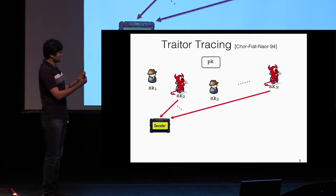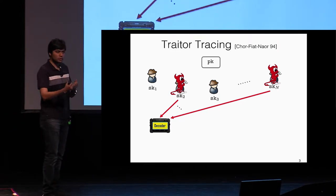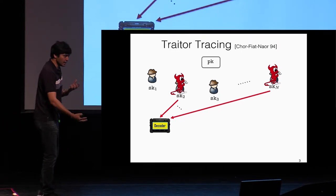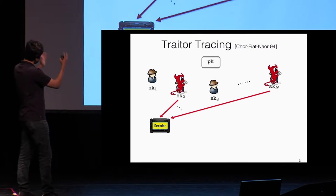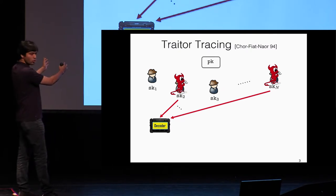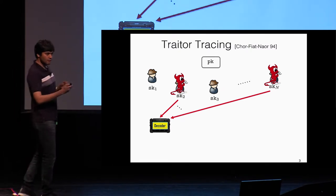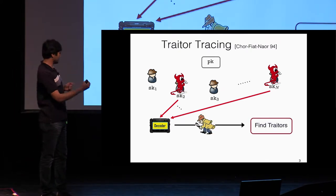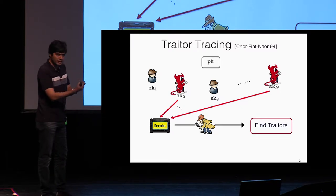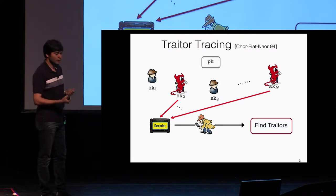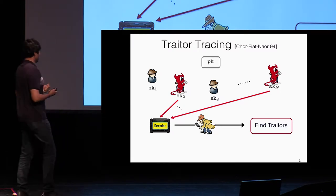A traitor tracing system allows the following capability: if we can just get a hold of some of these decoding devices, then we can basically trace — we can figure out which parties have been coerced by the adversary. That's the problem of traitor tracing.